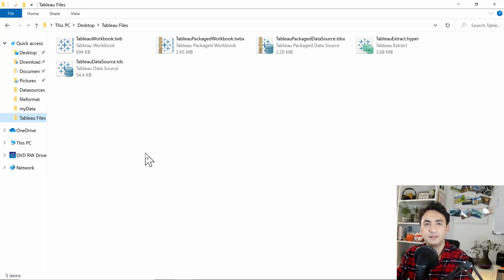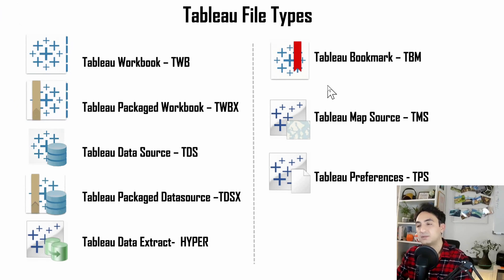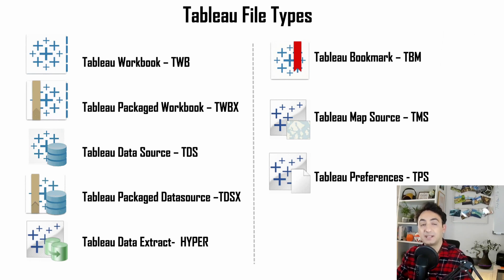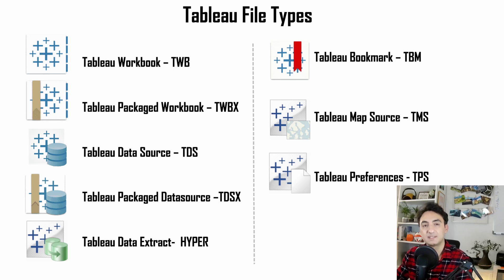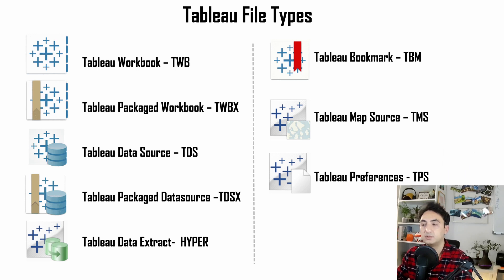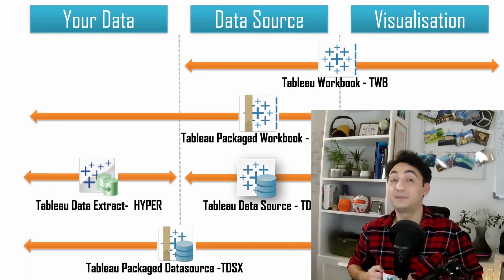Now we've covered the main commonly-used Tableau file types. There are other types that, in five years of working with Tableau, I've never used — they are not that famous but still worth mentioning. First, Tableau Bookmark TBM: you can export a single worksheet from one workbook to be used in another. Next, Tableau Map Source TMS: if you are connected to a map server that is not supported, you can create a TMS file to store that information. Finally, Tableau Preferences: if you create a custom color palette to be used as a standard across all your worksheets and dashboards, you can save that in this format.